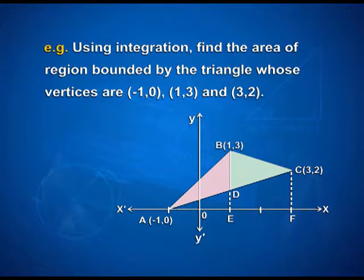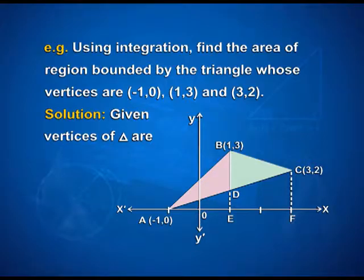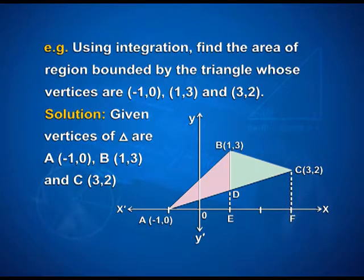The first question is: using integration, find the area of the region bounded by the triangle whose vertices are A(-1, 0), B(1, 3), and C(3, 2). As given, the vertices of the triangle are A(-1, 0), B(1, 3), and C(3, 2), as seen in the figure. We need to find the area of the triangle between these three vertices.